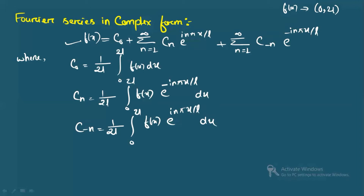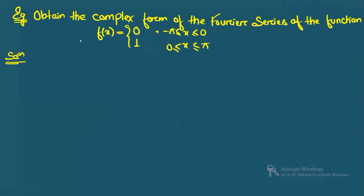We will now solve one example to make this more clear. The problem says: obtain the complex form of the Fourier series of f(x), where f(x) = 0 for −π ≤ x ≤ 0, and f(x) = 1 for 0 ≤ x ≤ π. First, we will calculate c₀.